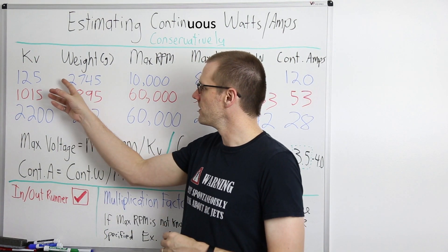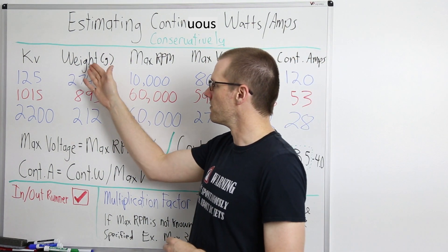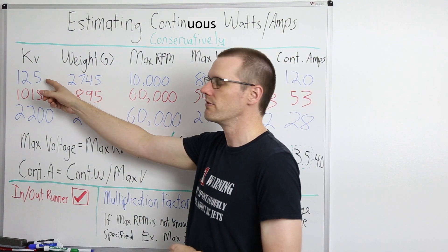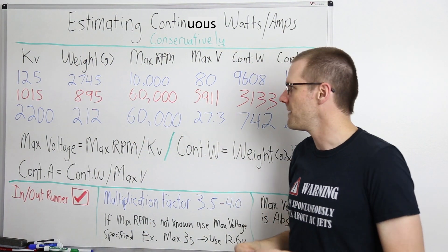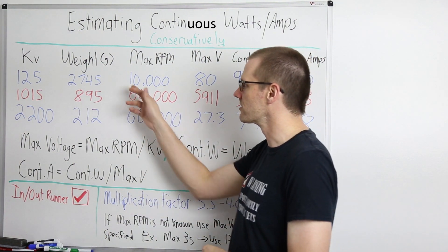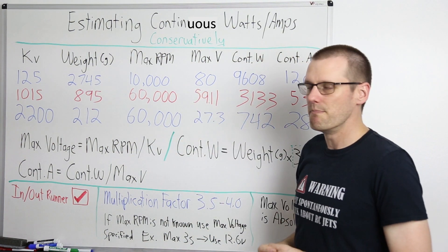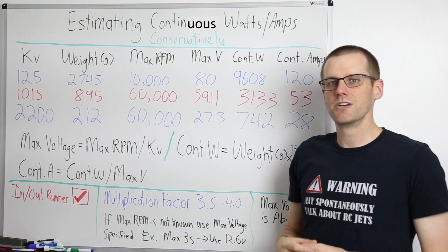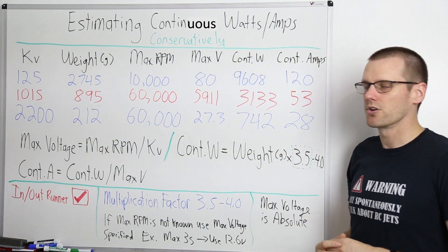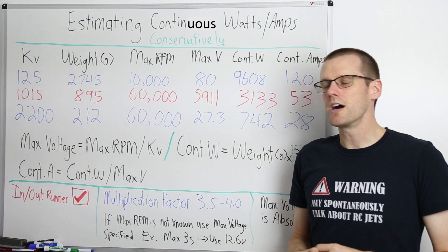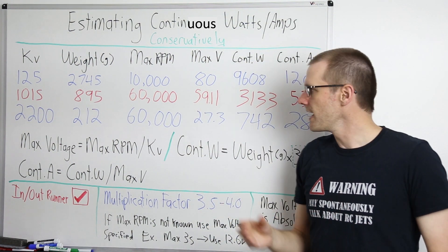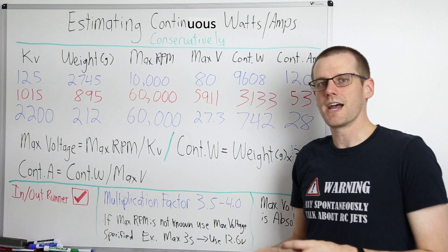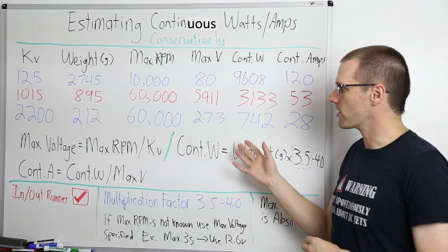I've included examples that range significantly in motor size. This first motor is gigantic — it's a 125 kV motor that weighs nearly three kilograms. I've personally never used a motor anywhere near this size. It can deliver a maximum of 10,000 RPM. Running through the math, we get a max voltage of around 80 volts, continuous power of nearly 10,000 watts, and a continuous current of 120 amps. This information is here so you can verify my values and run through the calculations yourself, then apply it to any motor you want.